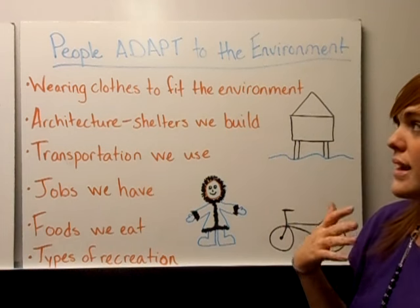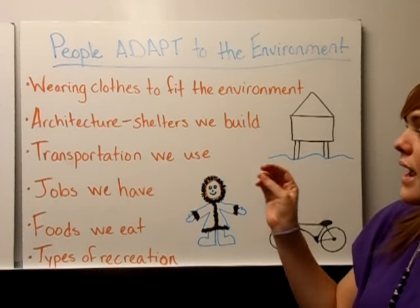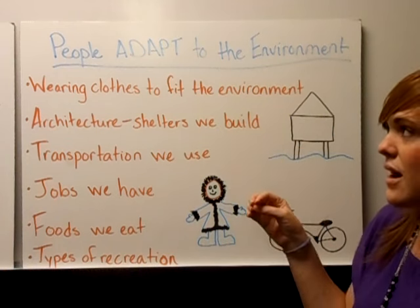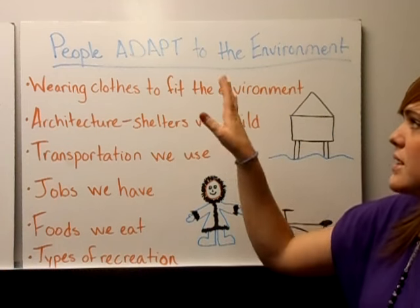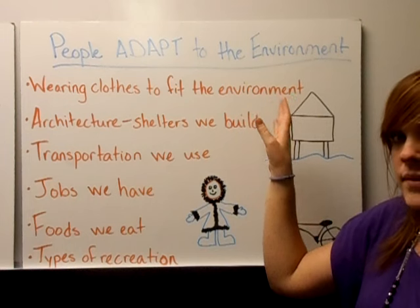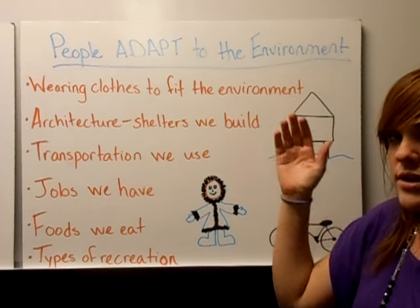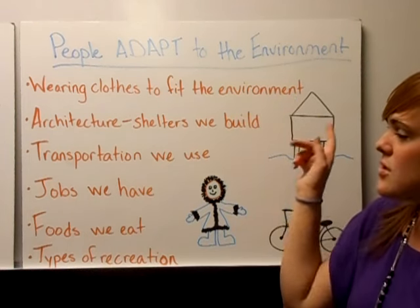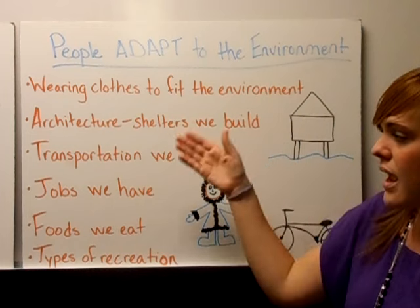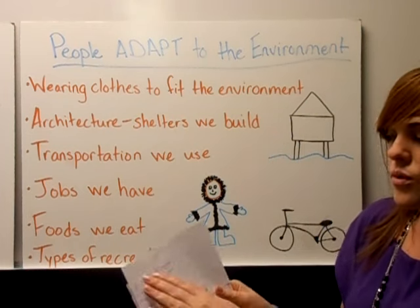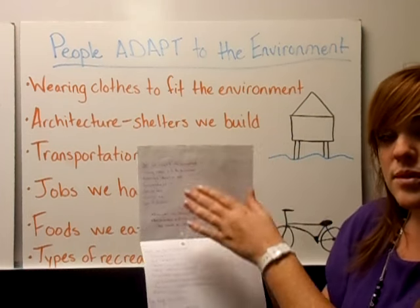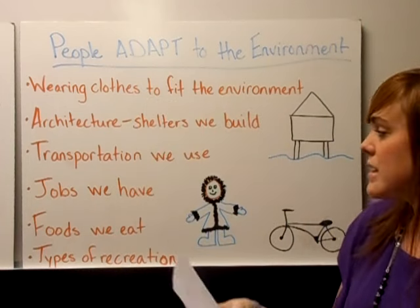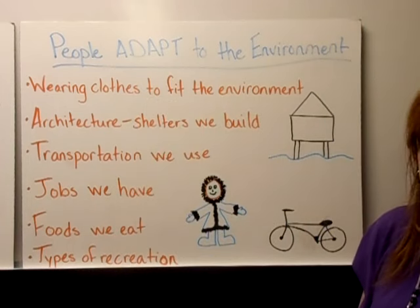Pause the video now. You need to pick four things from this list and write them down under 'people adapt to the environment' on your foldable. Open it up, write 'people adapt to the environment,' and four ways they adapt. Remember that you can use the top and the bottom.